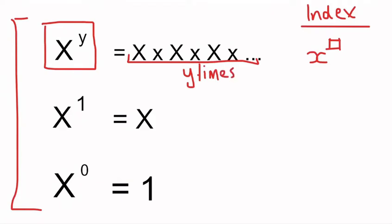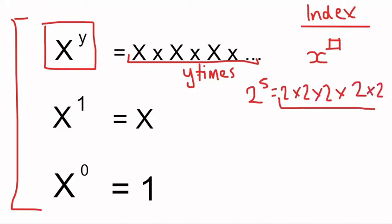For example, if x is 2 and y is 5, then 2 to the power of 5 is 2 times 2 times 2 times 2 times 2 — done five times. Or we could do 6 to the power of 3, which is 6 times 6 times 6 — done three times. That's our first index law.